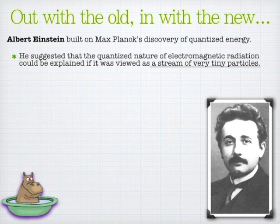One of the things that Einstein realized is that to make sense of Planck's model of quantized energy, it would make a lot of sense if energy was indeed carried in packets. So not only did it come in these little Planck steps, but those Planck steps of energy were due to the fact that energy was carried by very tiny particles called photons.